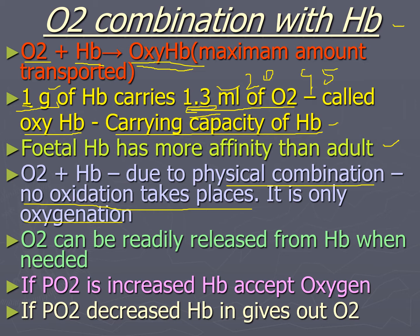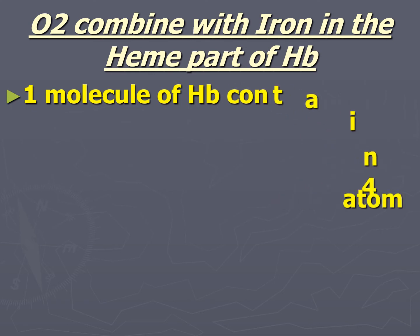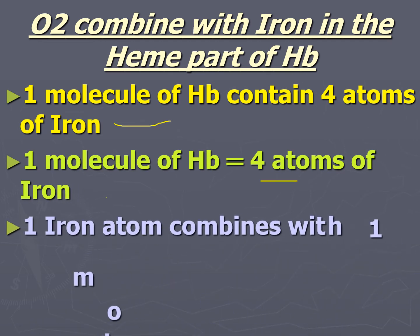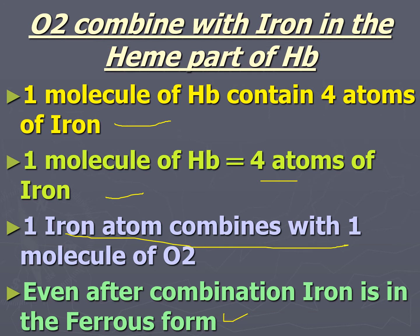Advantages of combination of oxygen with hemoglobin: First, oxygen can be readily released from hemoglobin when it is needed. Second, if partial pressure of oxygen increases, hemoglobin accepts oxygen; if partial pressure decreases, hemoglobin gives out oxygen. Oxygen combines with iron in the heme part of hemoglobin. One molecule of hemoglobin contains four atoms of iron, all present in ferrous form. Each iron atom combines with one molecule of oxygen, and after combination, iron remains in ferrous form only. That is why the combination is called oxygenation and not oxidation.